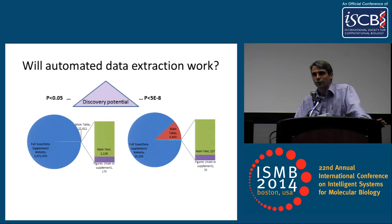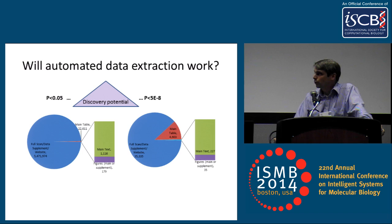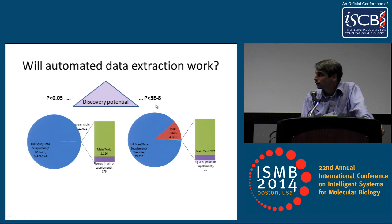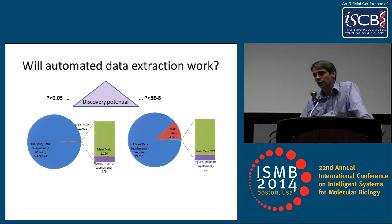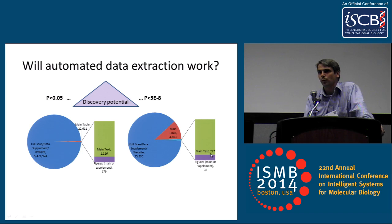One question we should ask is whether automated extraction approaches will work. I don't think so. We extract the exact location of every result in the original paper, so that enables us to do at least a crude assessment of where our results lie. At a genome-wide significant threshold — where you take, say, a million tests in the genome, and 0.05 divided by a million is 5×10⁻⁸ — a lot of the associations are appearing in the main tables and main text, so those might be easier to scrape. But the supplemental files are quite heterogeneous in their file format and vocabulary, and that's really where many of the results appear.